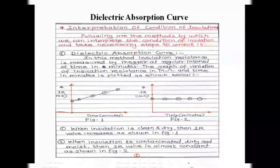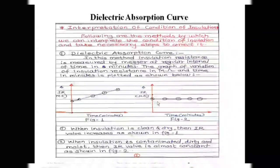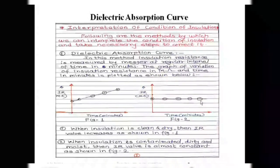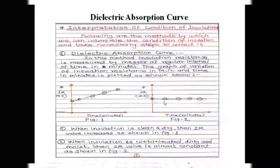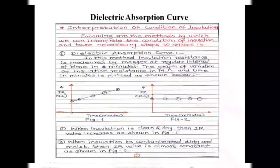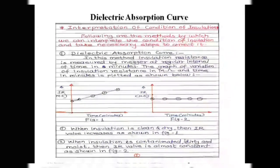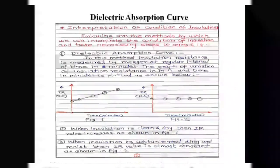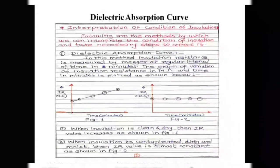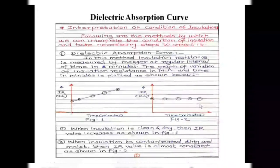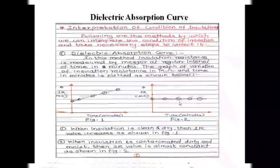Figure number two shows that the insulation resistance measured over the interval of time is almost constant — it does not increase or decrease. This means the insulation contains solid impurities, dirt, dust, moisture, or in the case of oil, dissolved gases or dissolved impurities. This kind of graph indicates that the insulation is deteriorated and weakened, and it has to be reconditioned immediately.